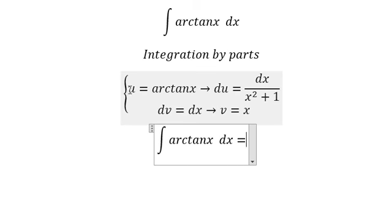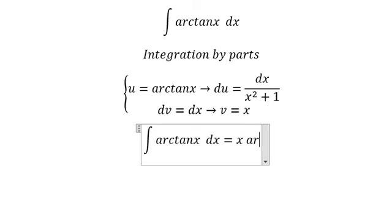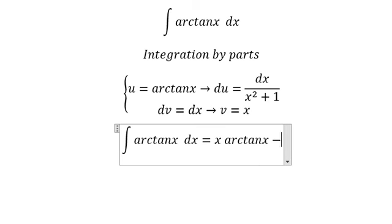So we have u multiplied by v. So we have x multiplied by arctan of x minus du multiplied by v, and then we have the integration.